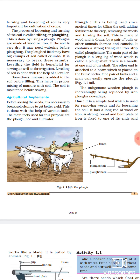Plow is made of wood and is drawn by a pair of bulls and other animals. Yeh ek wood se bana hota hai, lakdi se banate hai plow ko. Lakdi ke alawa iron se bhi bana sakti hai, aur isko animals drag karti hai. Pehle wale time mein animals drag karti thi, lekin ab modern crop production mein, modern techniques aa gayi hai, isliye tractors aur baaki vehicles isko drag kar sakte hai.